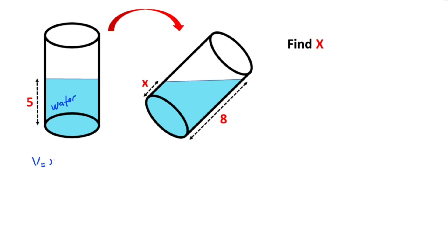First of all, we know that the volume of the vertical cylinder formula equals pi times r squared times height. So therefore, the volume of the water must be equal pi times r squared.